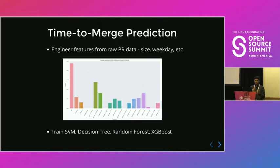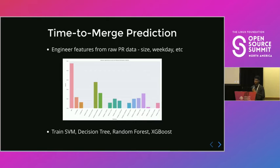We developed a bunch of features from our raw PR data, then scaled them and fed them to our machine learning models. We explored some basic models for this task: SVMs, decision trees, random forests, and gradient boosted trees. We found that in most cases a random forest outperforms the rest, so we went ahead with that model and saved it to our S3 bucket for deployment.